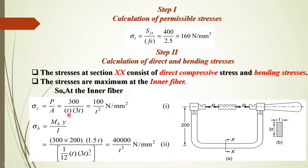By putting in values, P is 300 Newton and area is T into 3T, so compressive stress sigma C becomes 100 divided by T squared Newton per mm square. T is unknown and will be calculated at the end, so T remains in this equation — call this equation 1.